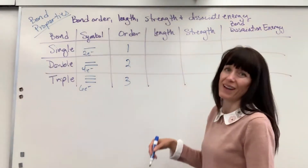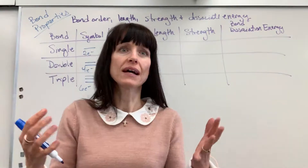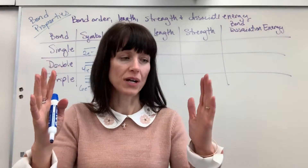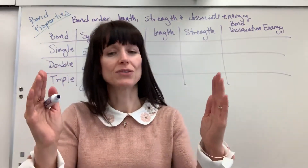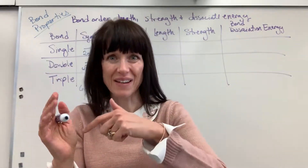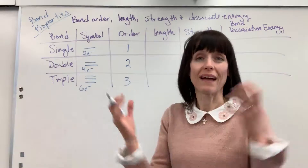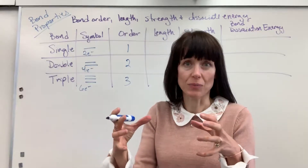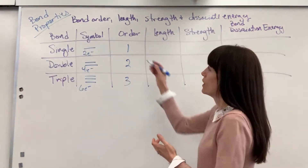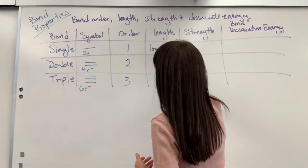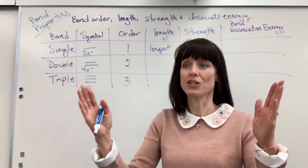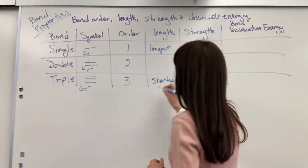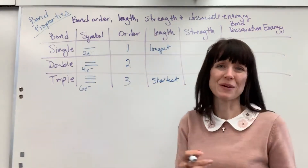Now let's talk about length. When those electrons share, what's happening is that the electrons from one atom are attracted to the nucleus of the opposite atom. The more electrons that are being shared, the closer they will attract and pull — the smaller the bond length. So the single bond is the longest, because you only have two electrons sharing and attracting to those opposite nuclei. The triple bond is going to be the shortest, and the double bond hits somewhere in the middle.